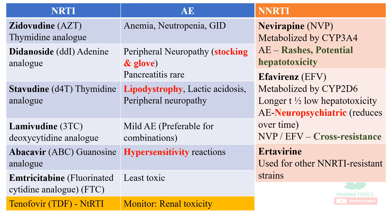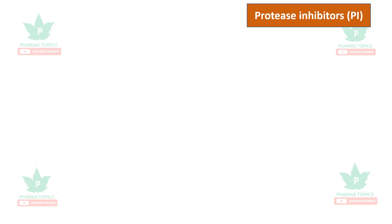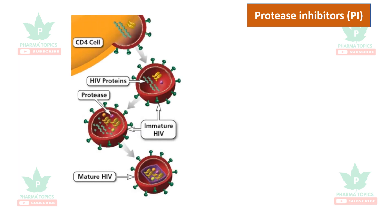Efavirenz is metabolized by CYP2D6, has a longer biological half-life, and low hepatotoxicity. Its adverse effects are neuropsychiatric symptoms, which reduce over time. Both nevirapine and efavirenz have cross-resistance — resistance to one confers resistance to the other. Etravirine is used for NNRTI-resistant strains — that is, strains resistant to nevirapine and efavirenz.